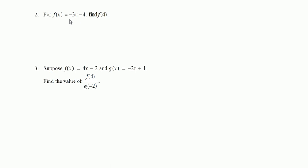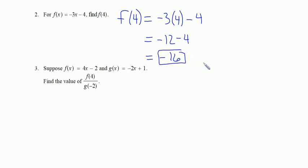For number two, we're given f of x equals negative three x minus four, and we're asked to find f of four. So f of four means just put four into the f function. We have negative three times four, and subtract four. Negative three times four is negative 12, minus four more is negative 16. So f of four is negative 16.